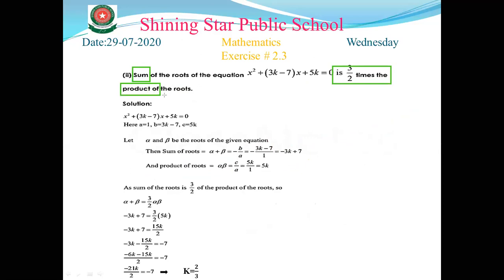Comparing with the standard form of the quadratic equation, we get a = 1, b = (3k - 7), c = 5k. Let alpha and beta be the roots. Sum of roots: alpha + beta = -b/a. With b = (3k - 7) and a = 1: multiplying minus gives -(3k - 7) = -3k + 7. Product of roots: alpha times beta = c/a = 5k/1 = 5k.